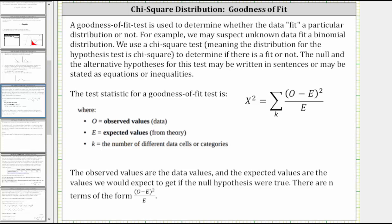We use a chi-square test, meaning the distribution for the hypothesis test is chi-square, to determine if there is a fit or not. The null and alternative hypotheses for this test may be written in sentences or may be stated as equations or inequalities.